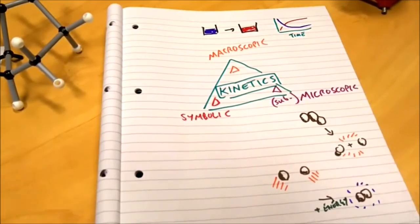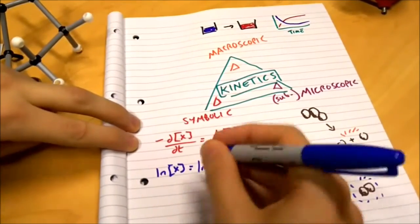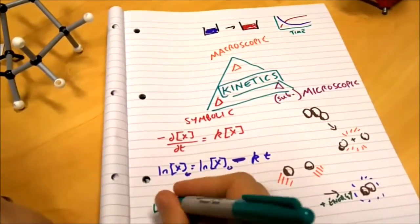In the symbolic world, we represent this with mathematics and equations that help us predict exactly what will happen, generating laws that the molecules seem to follow.